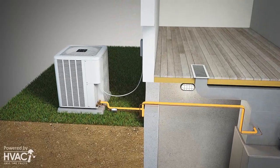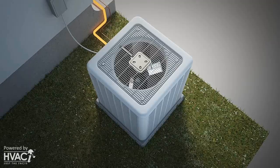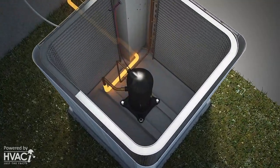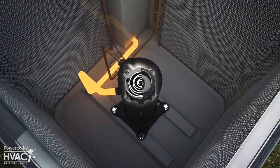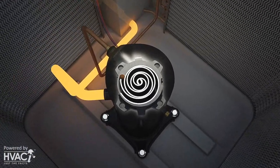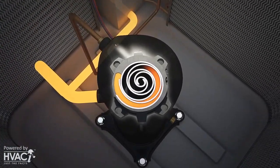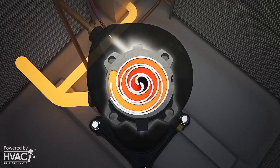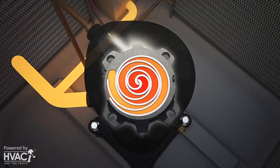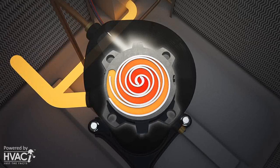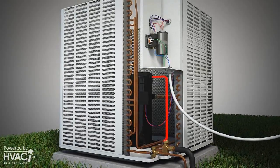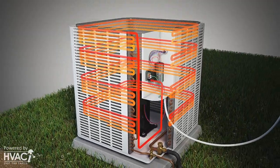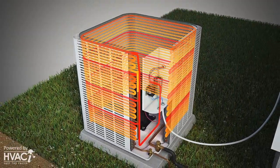The refrigerant travels to the outdoor condensing unit via a suction line and enters the bottom port of the compressor in a gas state. We see by the cutaway image that this is what is referred to as a scroll compressor. As the scroll inside the compressor turns, it applies pressure to the gas refrigerant, raising the temperature of that refrigerant and pumping it out of the top port of the compressor, where it is then distributed throughout the copper tubing inside the condenser coil, which wraps three-quarters of the way around the outside of the condensing unit.